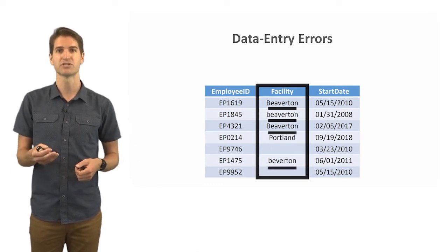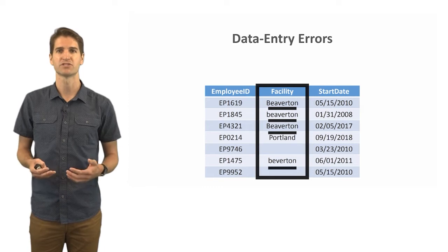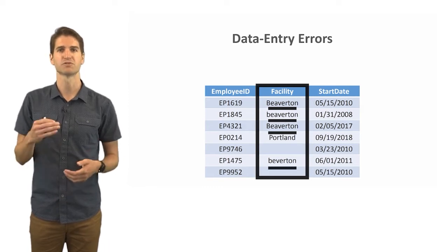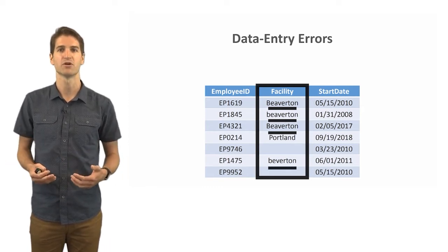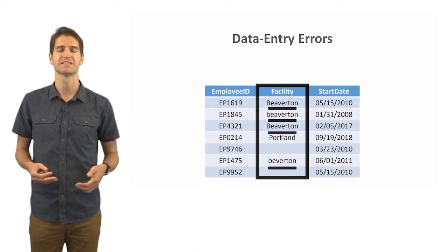Well, the reality is that Beaverton is spelled two different ways and in one instance it has a capital B. At the very top we have Beaverton spelled with a capital B. Just below that, the next entry we have Beaverton with a lowercase b. And if you look all the way towards the bottom you'll see Beaverton that is misspelled.